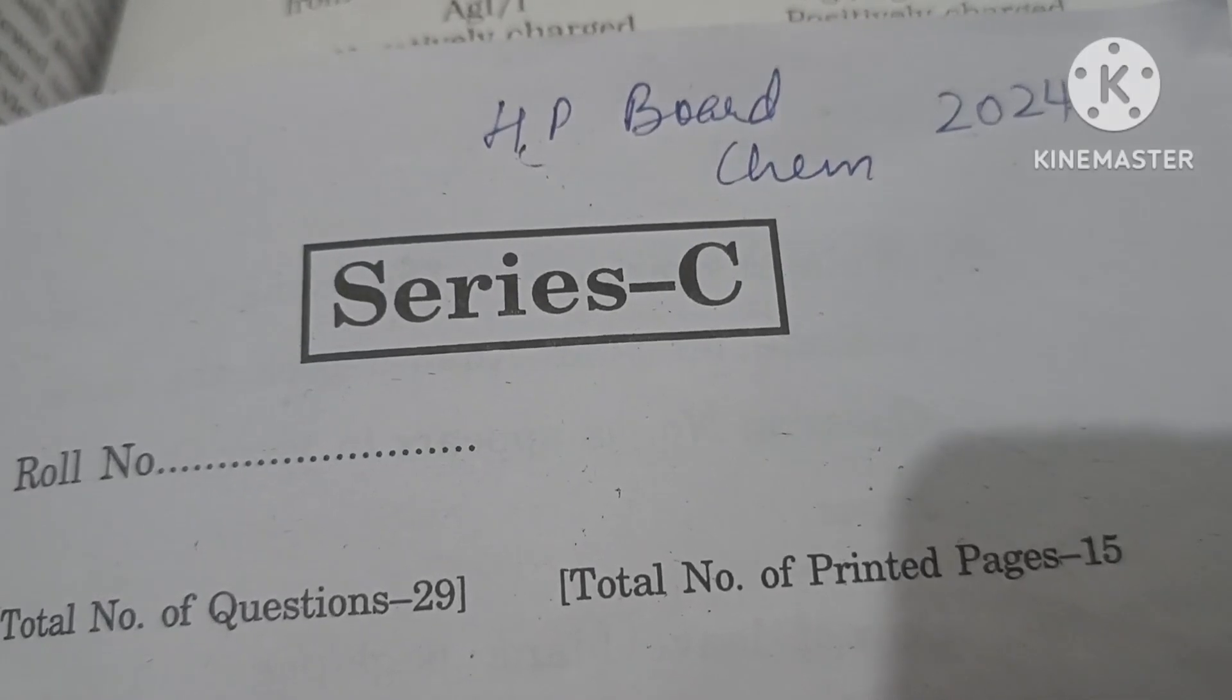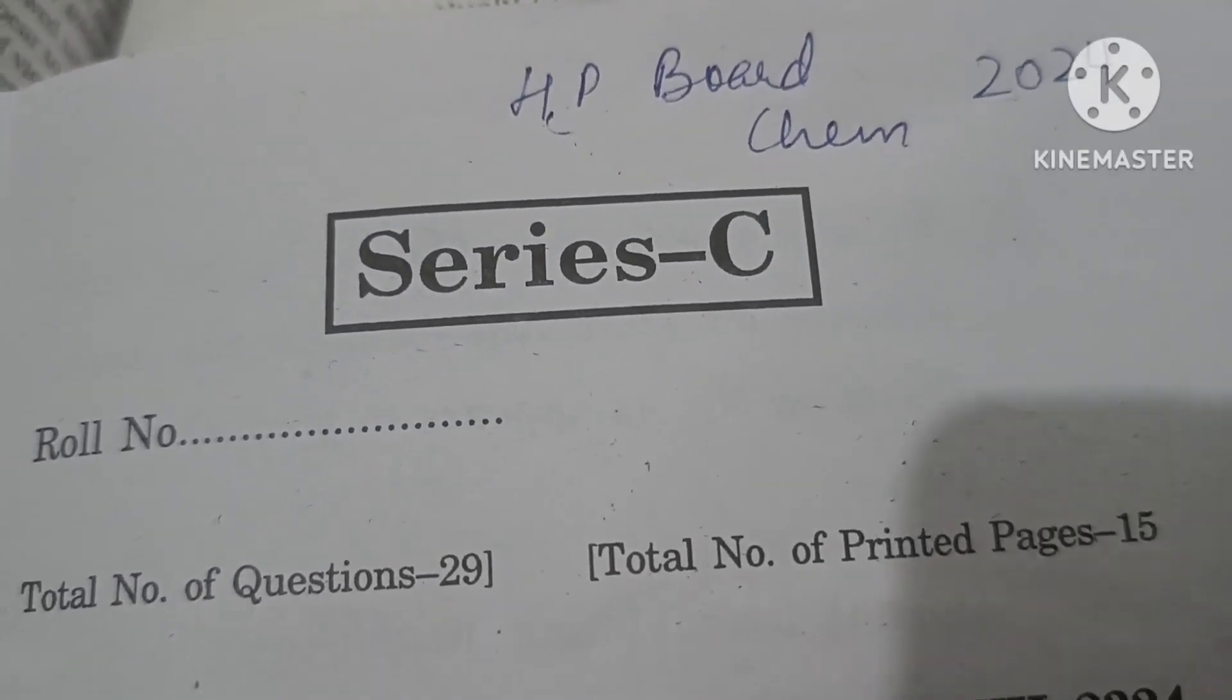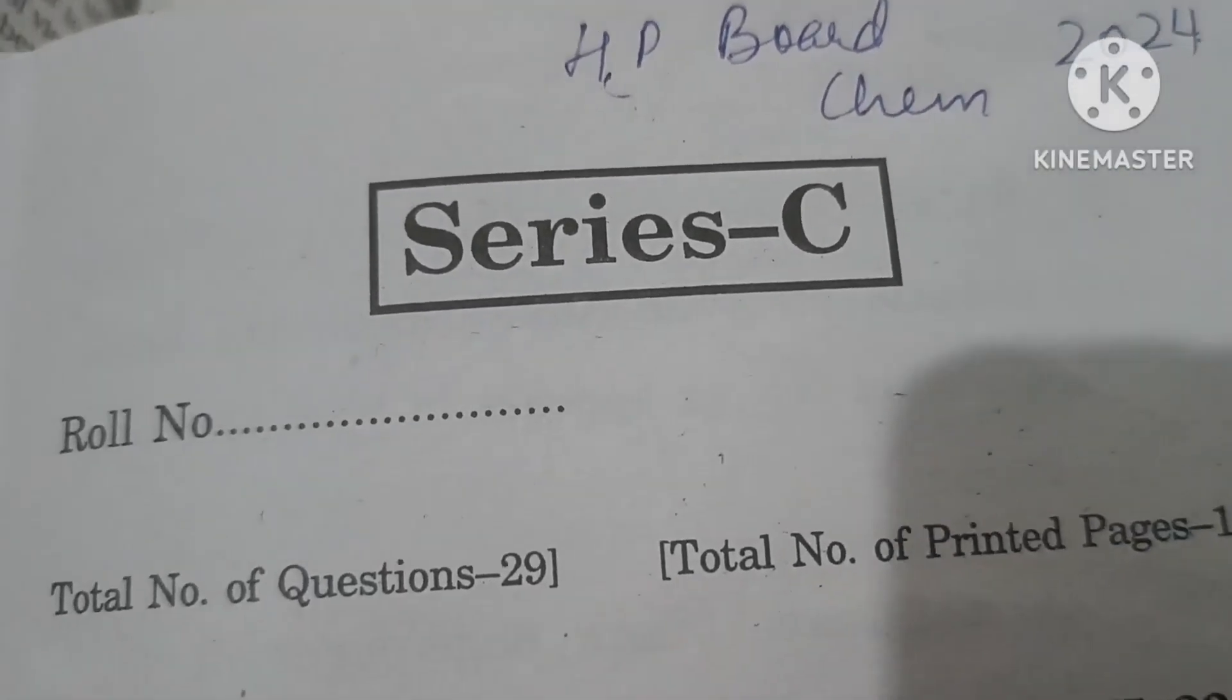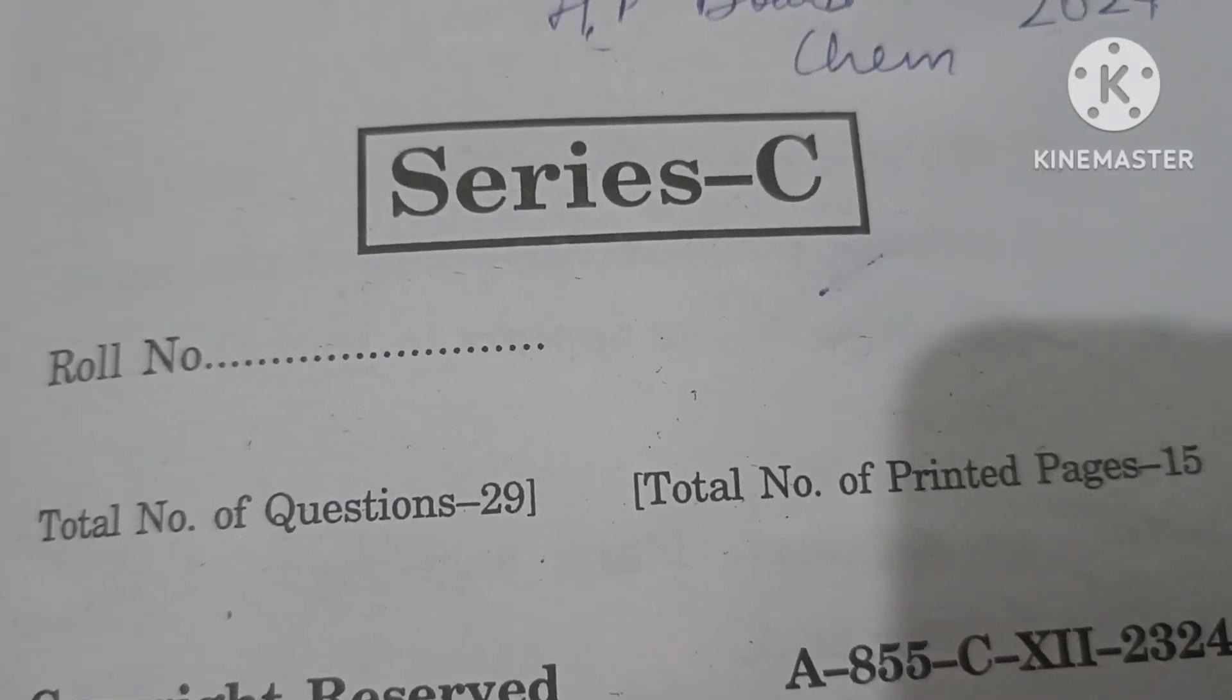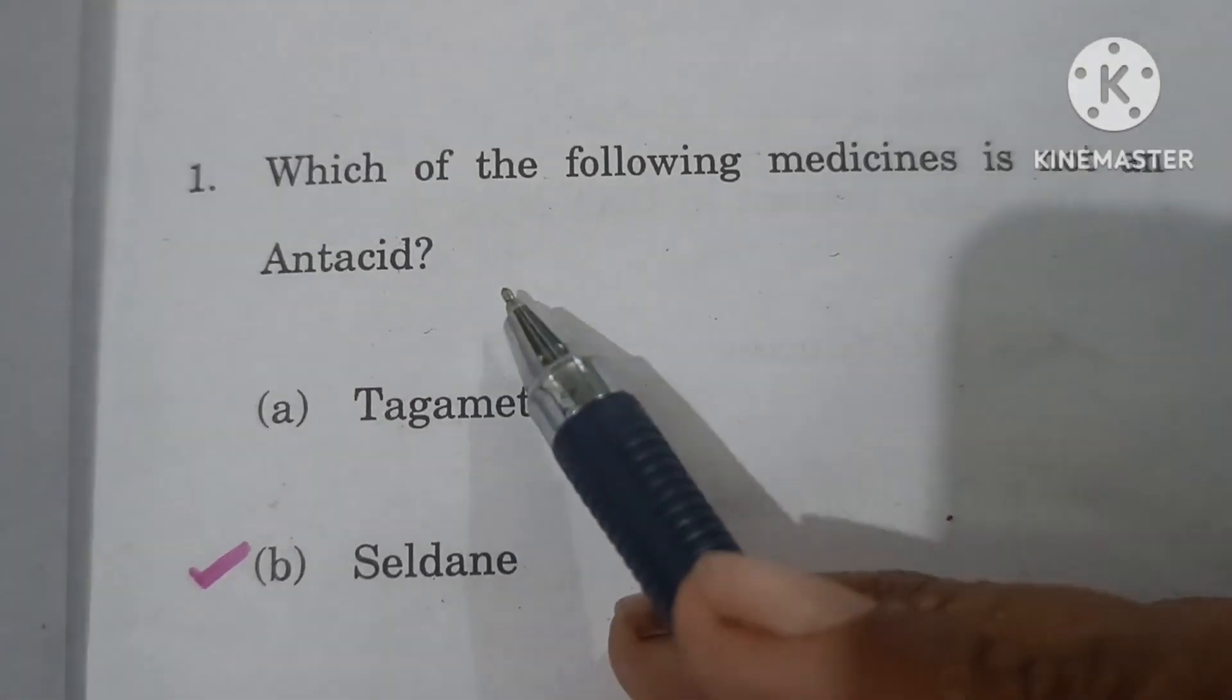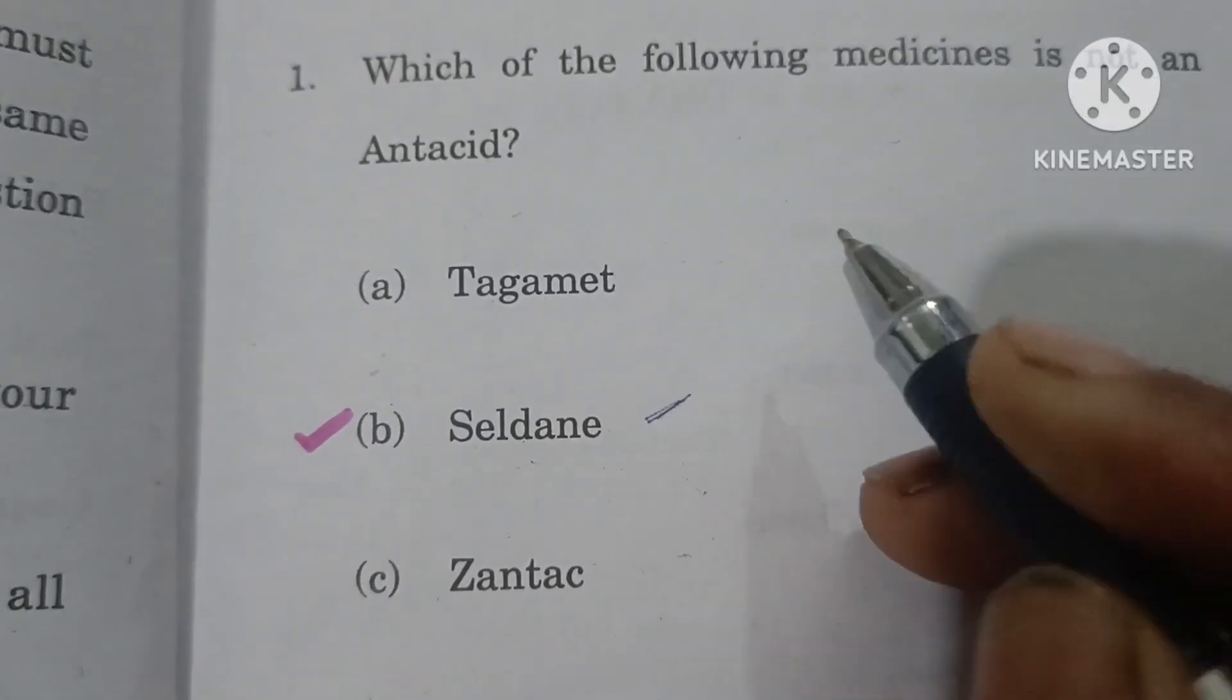Good morning students, welcome to Bindu Dadwal Chemistry Lessons. We are solving HP Board 2024 Chemistry Series C paper. Let us begin. Question number one: Which of the following medicines is not an antacid? The answer is Seldane, which is an antihistamine used for allergies. It's not an antacid; the rest are antacids.